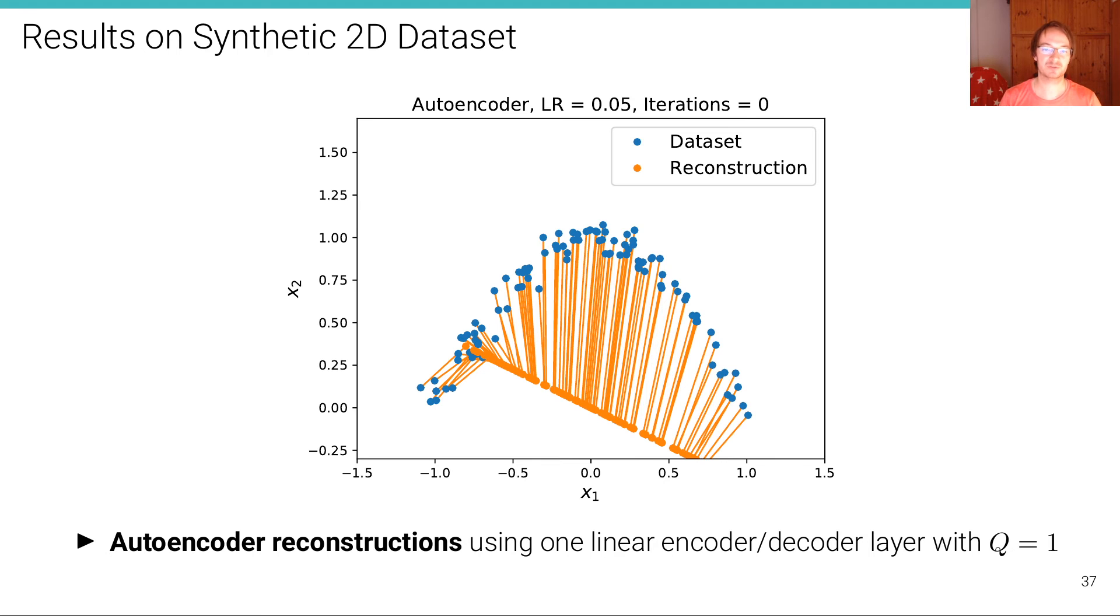So what I did is I encoded the blue points and then I decoded them. And this gives me the reconstruction and I draw a line between the two. And what we have here is an autoencoder with only one linear layer for both the encoder and decoder and the latent dimensionality of one. And trained it autoencoder with a learning rate of 0.05. And this is the first iteration. So we don't have anything useful in the first iteration. It's a random initialized model. So we get a random projection.